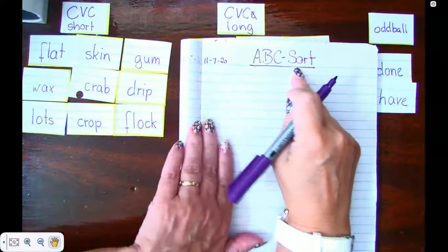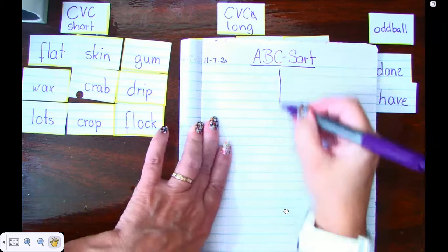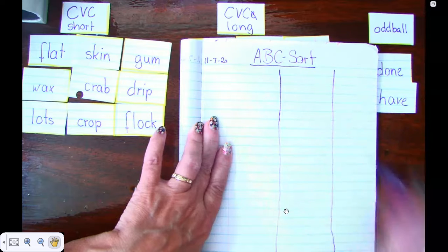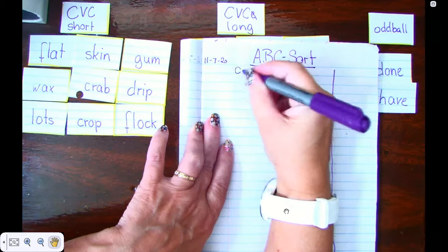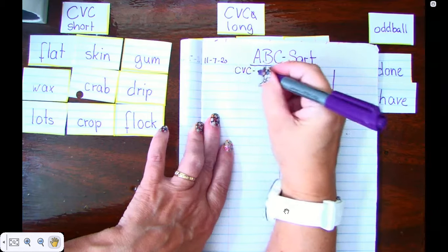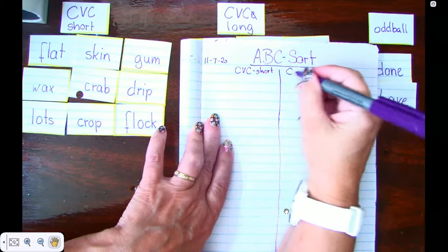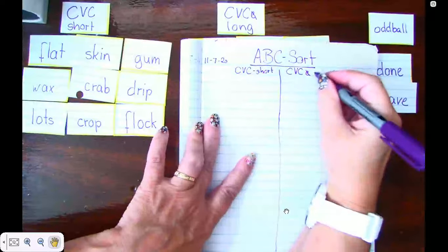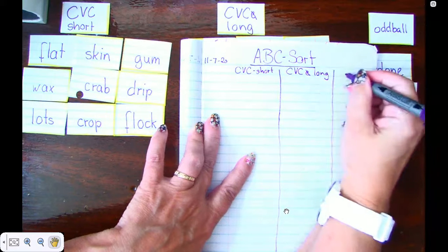Then I need to write down my three categories. I'm going to make my first column and my second column. I'm going to write down my CVC and we know this is the short vowels. Now over here I write CVCe with the silent e and those are my long vowels, and then we have our oddball.